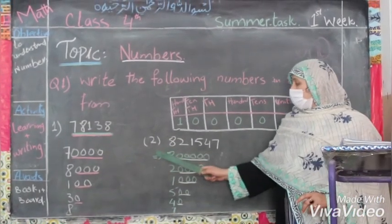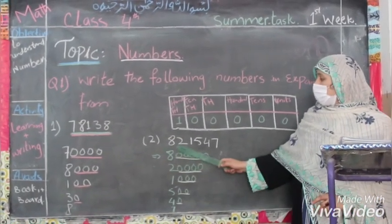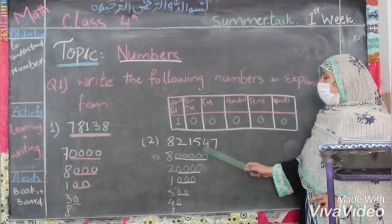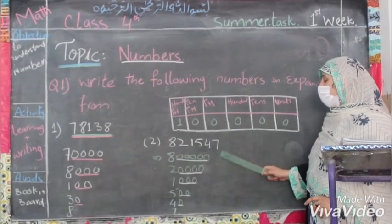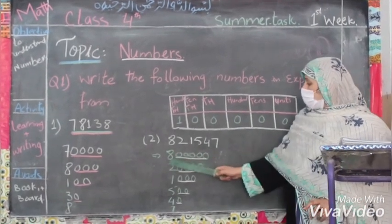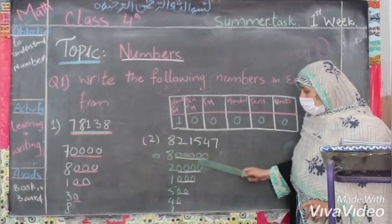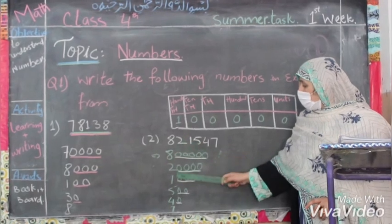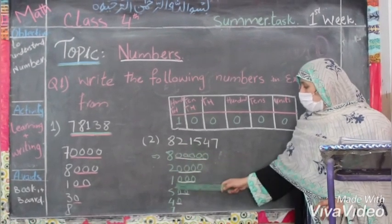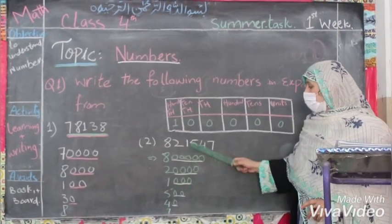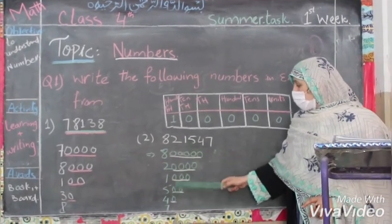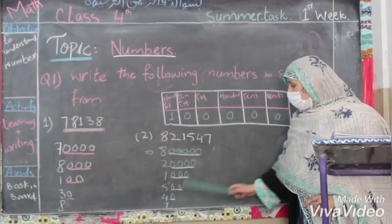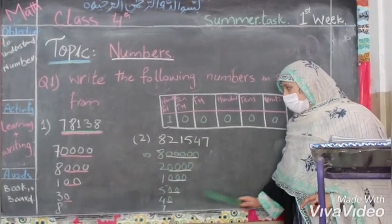In number two we have eighty-two thousand one hundred and forty-seven. This is eighty thousand, this is two thousand, this is one thousand, this is five hundred, and this is forty and seven.